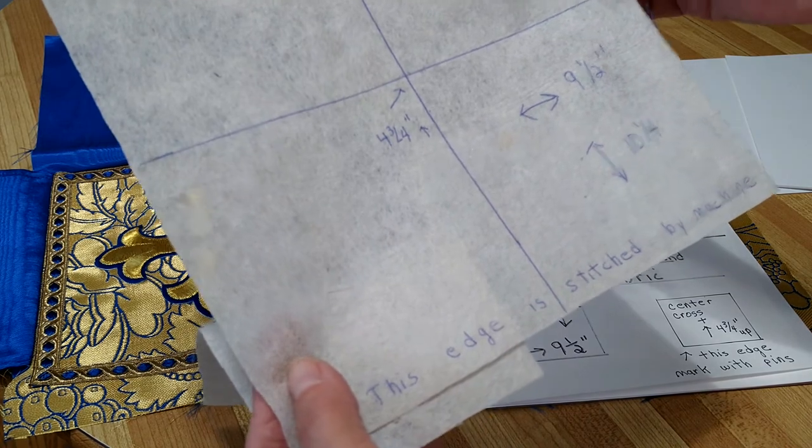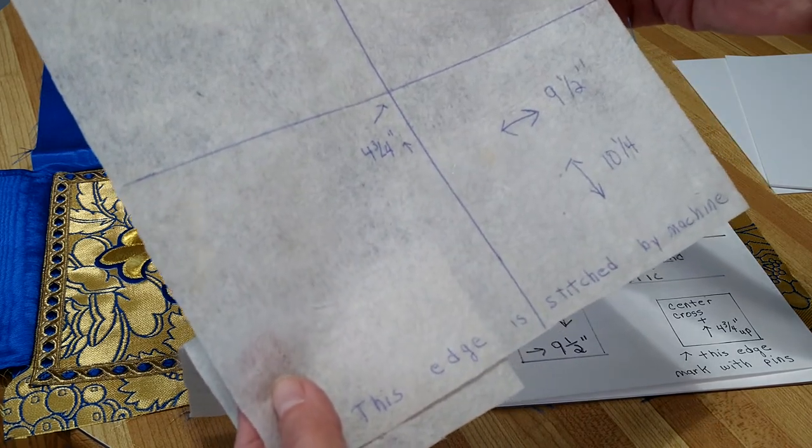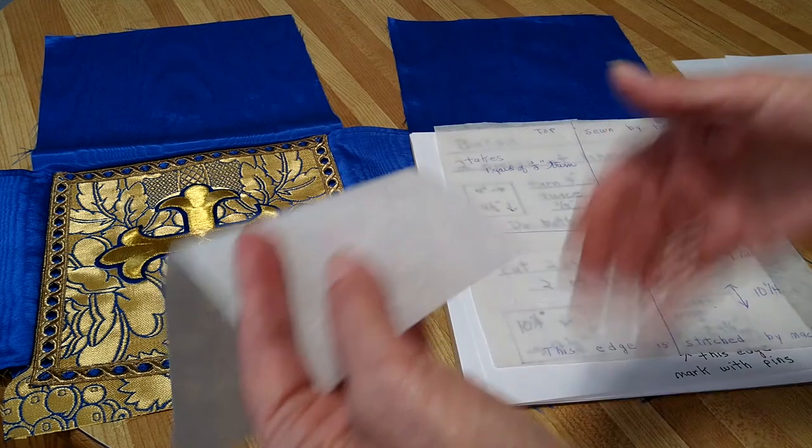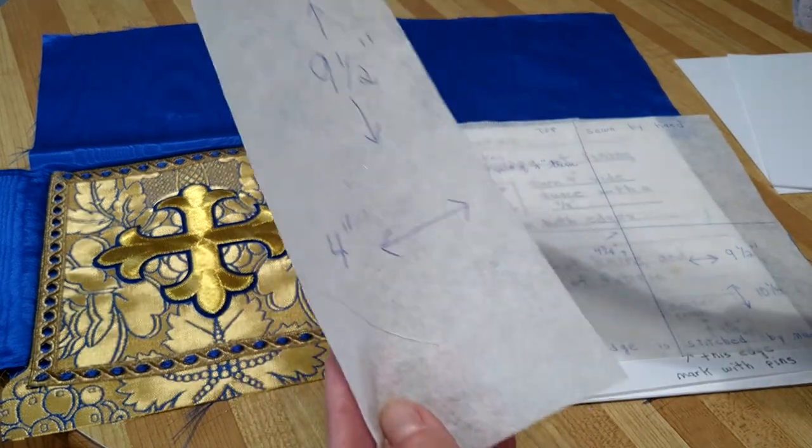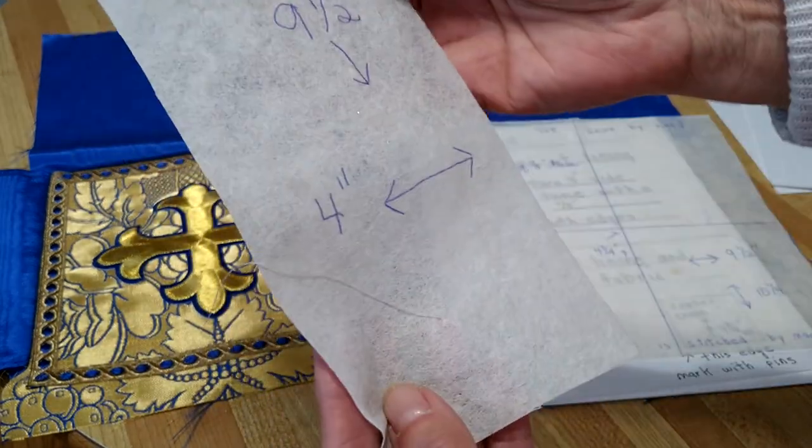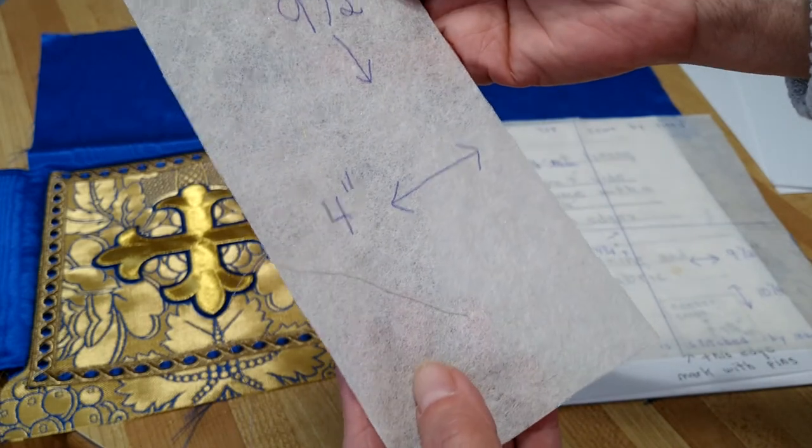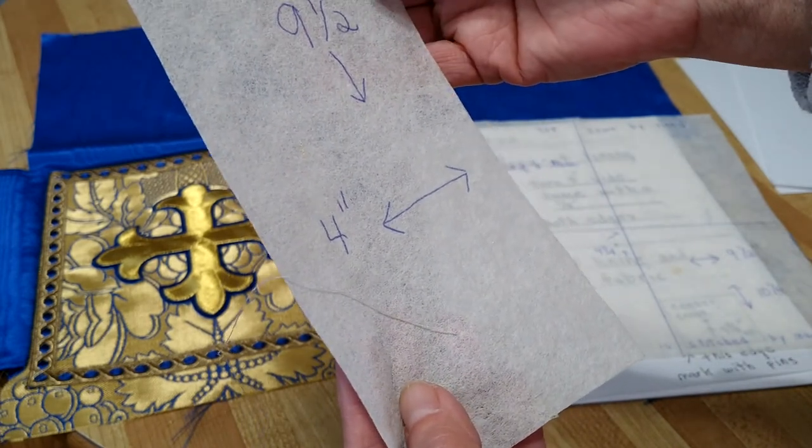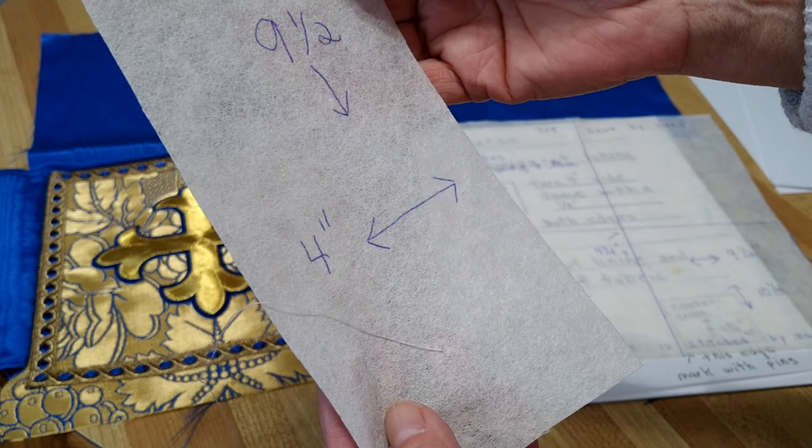You need two of these of fabric and two of lining. Then you will need another pattern piece nine and a half inches long by four inches wide, and you'll be cutting out two out of lining.